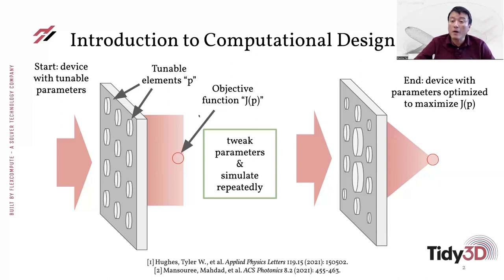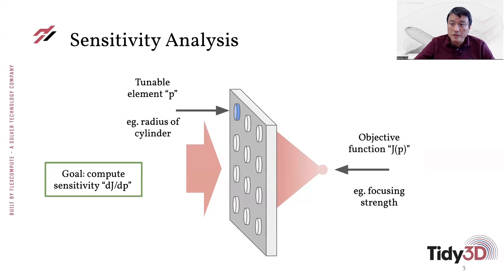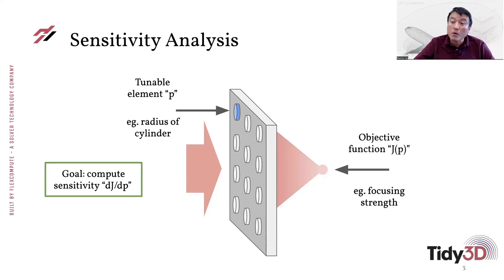Very closely related to this optimization problem is sensitivity analysis. Suppose you already have a device that works — in this case a device that focuses light. A natural question, especially for experimental implementation, concerns the sensitivity of the device: if you have small fluctuations or small deviations in the size of the tunable elements from your design value, how does that affect the performance of the device?